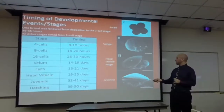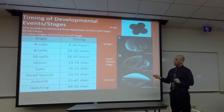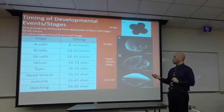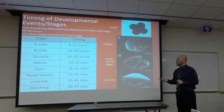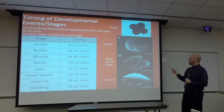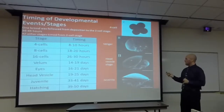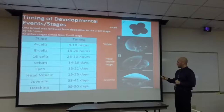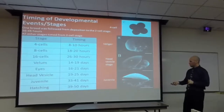For timing of developmental events: one brood was followed from deposition to the two-cell stage, taking about 36 to 45 hours. The four-cell stage, veliger stage, head vesicle stage, and juvenile stage were all recorded. Comparing with Crepidula fornicata: Crepidula fornicata has much smaller eggs — images shown to scale reveal a significant size difference.